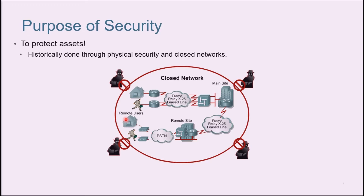Earlier, I asked you about the purpose of security. Basically, the answer is to protect assets — to protect the resources that we have. Historically, this was done through physical security and closed networks. We have two types of networks: closed network or an open network. In a closed network, we have tight, strong security, but lesser access. The common network security terms include threat, vulnerability, mitigation, and risk.